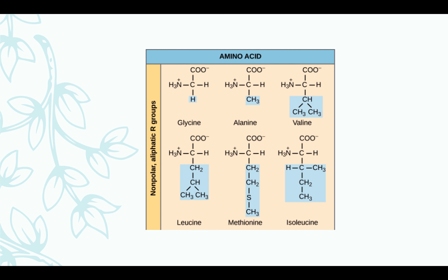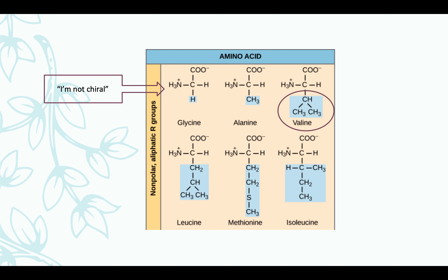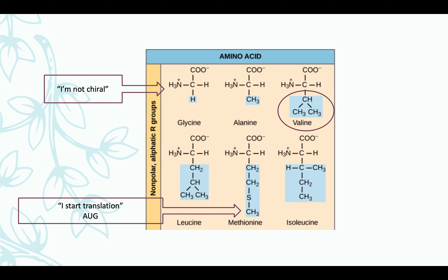Let's look at some of the non-polar R-groups and some ways to remember them. Glycine is not chiral — remember, we mentioned that earlier. Valine has a V-shaped R-group. Methionine is the first amino acid in translation — note that AUG is the start codon in your protein synthesis.